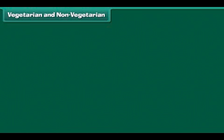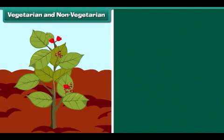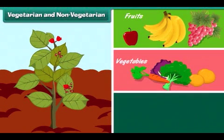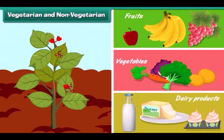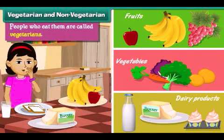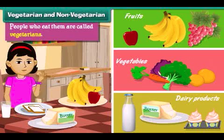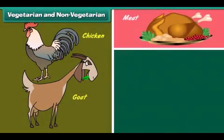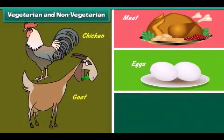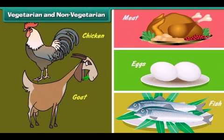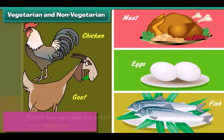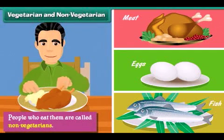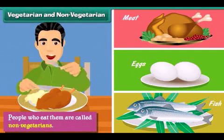Plant products like fruits, vegetables and dairy products are vegetarian food. People who eat them are called vegetarians. Animal products like meat, eggs and fish are non-vegetarian food. People who eat them are called non-vegetarians.